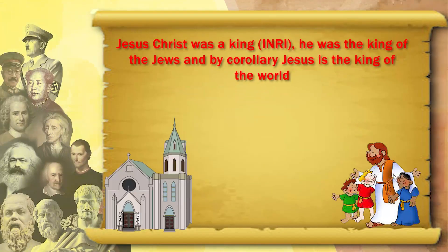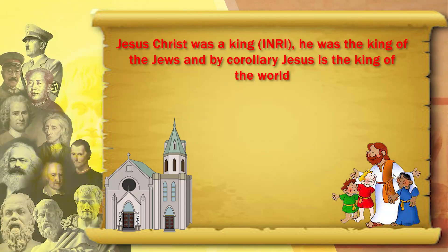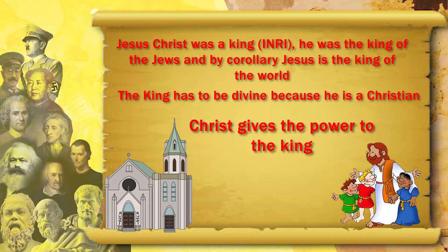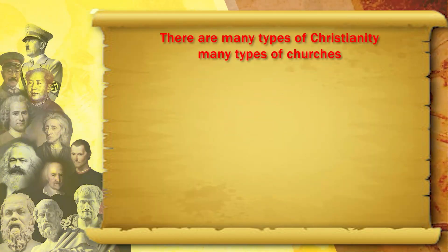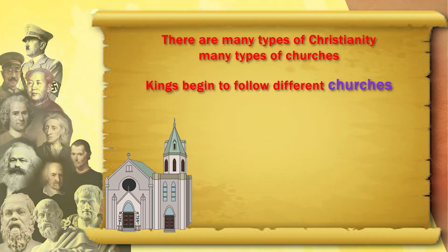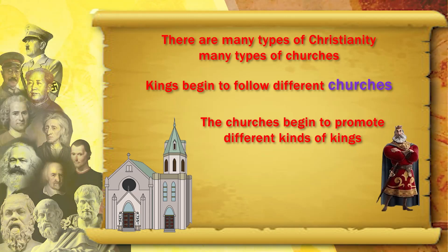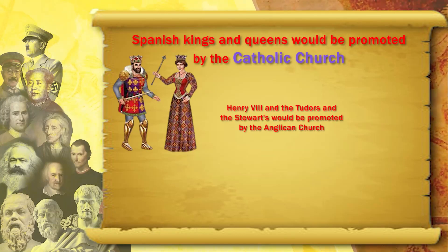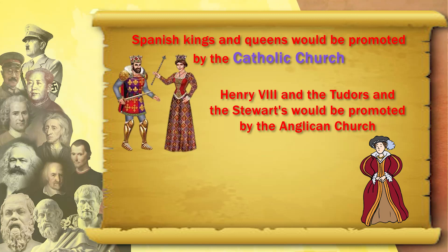Because Jesus Christ was the king — INRI: Isa Nazarethus Rex, meaning Jesus is the king of the Jews, and by corollary Jesus is the king of the world. So the king has to be divine because he is a Christian. The Spanish kings and queens would be promoted by the Catholic Church; Henry VIII and the Tudors of England would be promoted by the Anglican Church. So England and Spain would be fighting, and this fight would be between the Catholics and the Protestants.